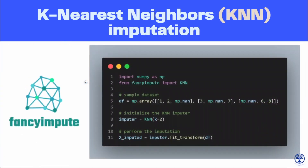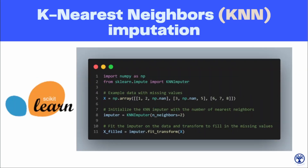KNN can also be used in both FancyImpute and sklearn. In FancyImpute, you can simply import KNN and initialize it by specifying the number of nearest neighbors with parameter K (e.g., K=2), then perform the imputation with fit_transform. In sklearn, you import KNNImputer and when you initialize it, you assign the nearest neighbors with the n_neighbors parameter. These are the small differences in using KNN imputer in sklearn versus FancyImpute, but the backend procedure is absolutely the same.